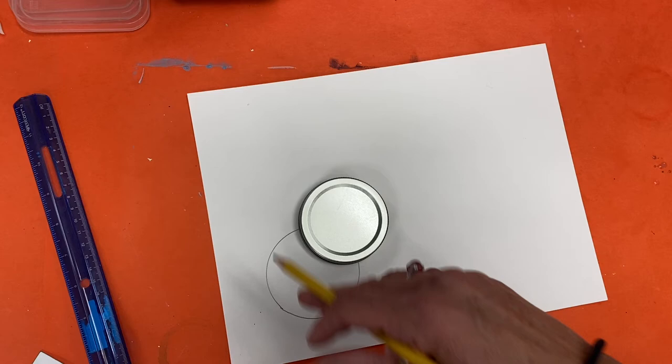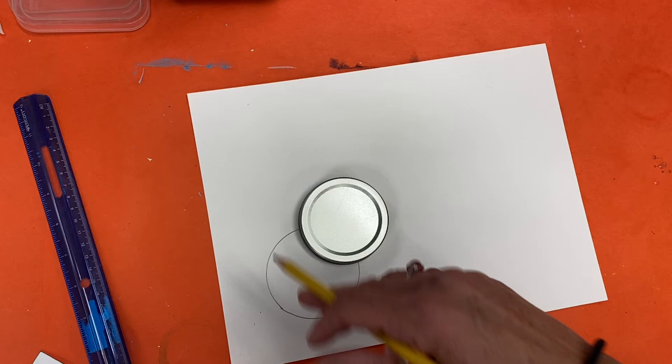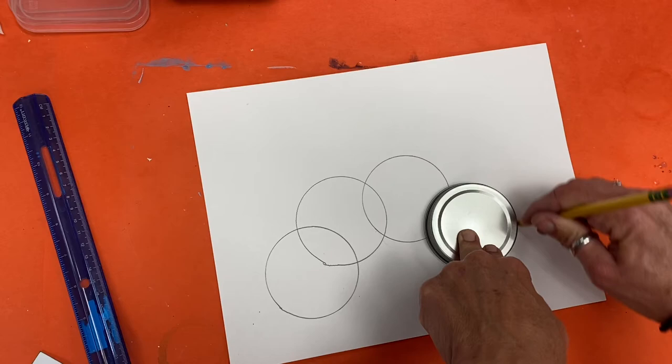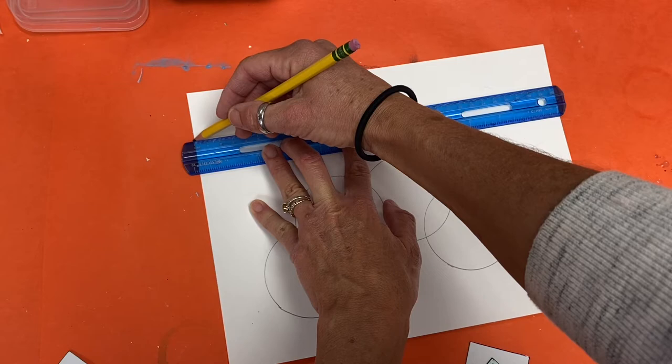You guys might want to do some practice sketches in your sketchbooks first. I'm just getting started on the big paper here. I'm going to overlap my circle and sort of see what happens. I definitely would recommend doing some sketching first in your sketchbook. I'm just going to go around, play around with my circle.